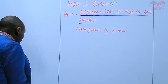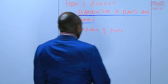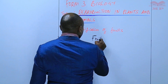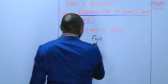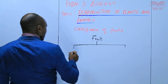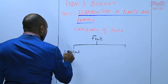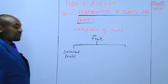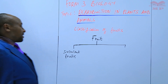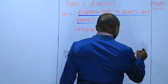So we are talking about fruits, and these fruits are broadly classified into two. We have what we call the succulent fruits — these are the juicy fruits, the fruits that have juice in them, they are watery inside. And then we have those that are dry fruits.